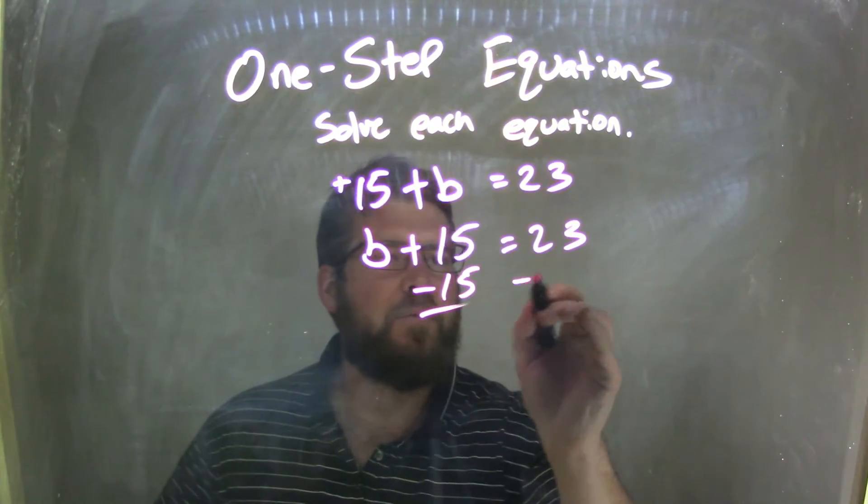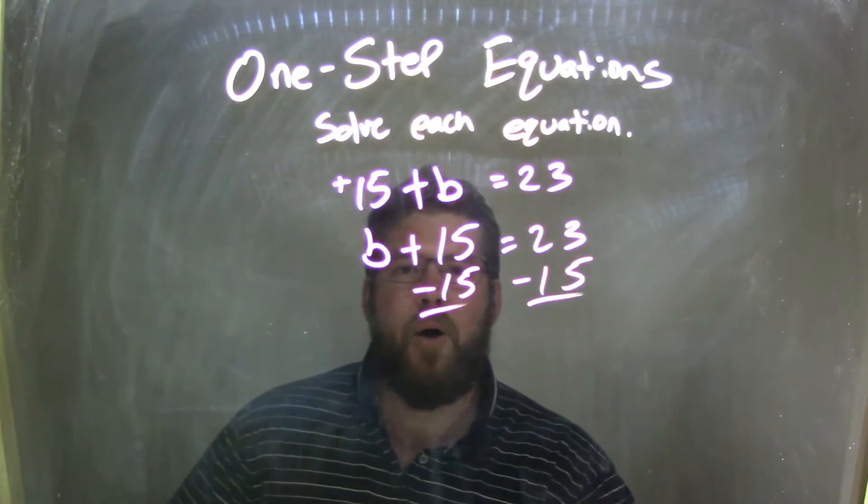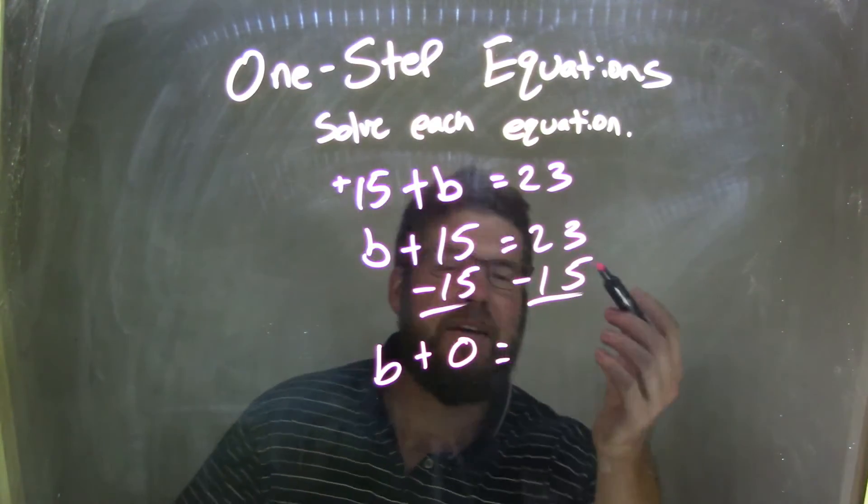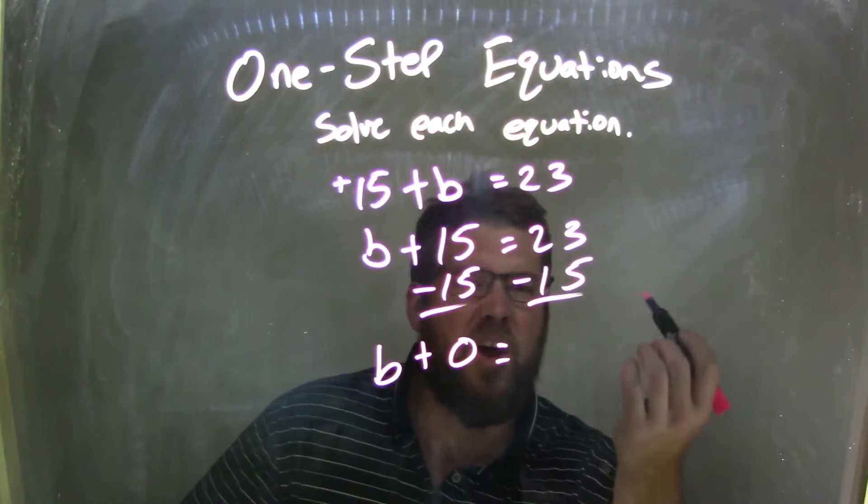Subtract 15 from both sides and now we're left with b. 15 minus 15 is zero and now I have 23 minus 15. How do I solve that?